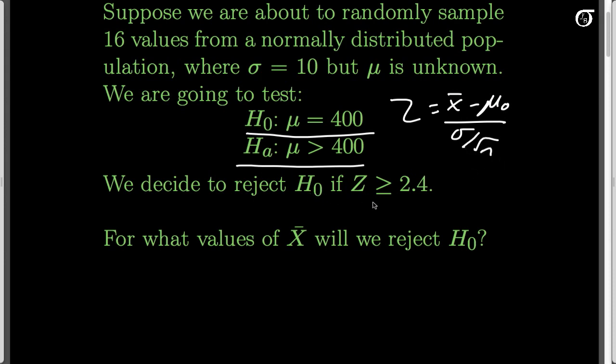We decide to reject the null hypothesis if our z is bigger than or equal to 2.4. We're using that rule just for this example to see how it works out.